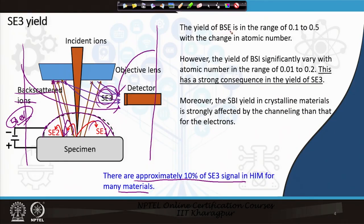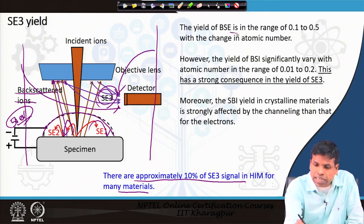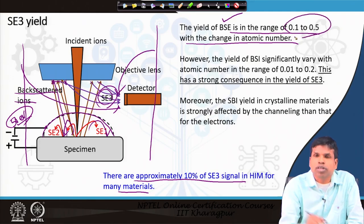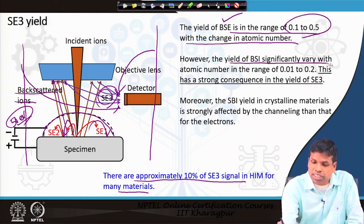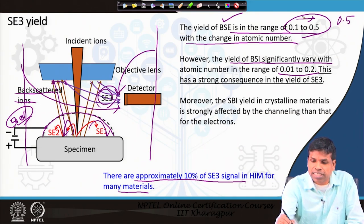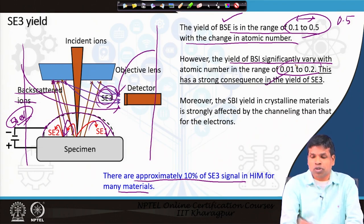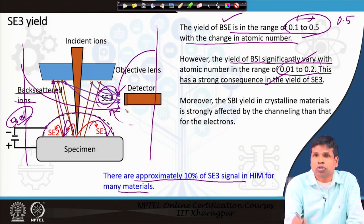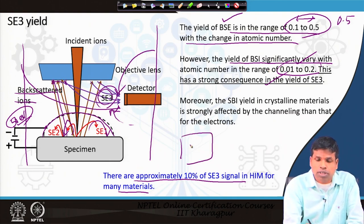The yield of backscattered electrons ranges from 0.1 to 0.5 as atomic number changes — as atomic number increases, backscattered electron yield increases. On the other hand, the yield of backscattered ions varies significantly with atomic number in the range of 0.1 to 0.2. The ratio of these ranges is much smaller for ions. This wide variation has a strong consequence on SC3 imaging — we can use SC3 electrons to identify differences in atomic number distribution within the specimen.